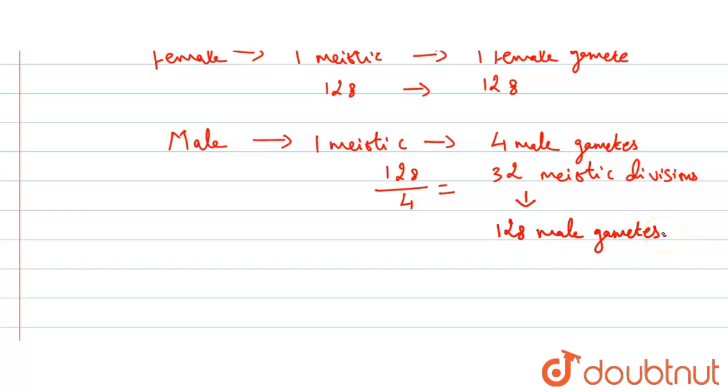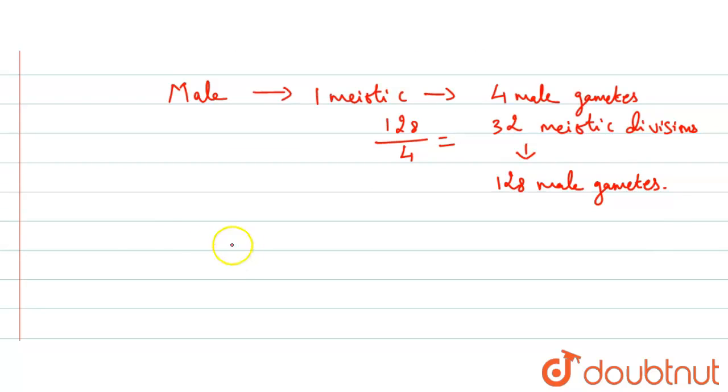So the total: 128 female gametes plus 32 meiotic divisions gives